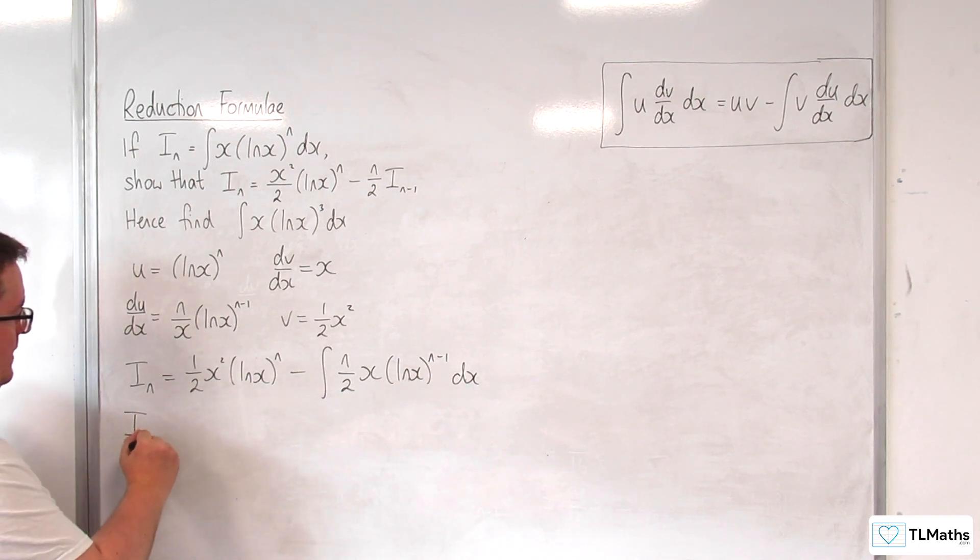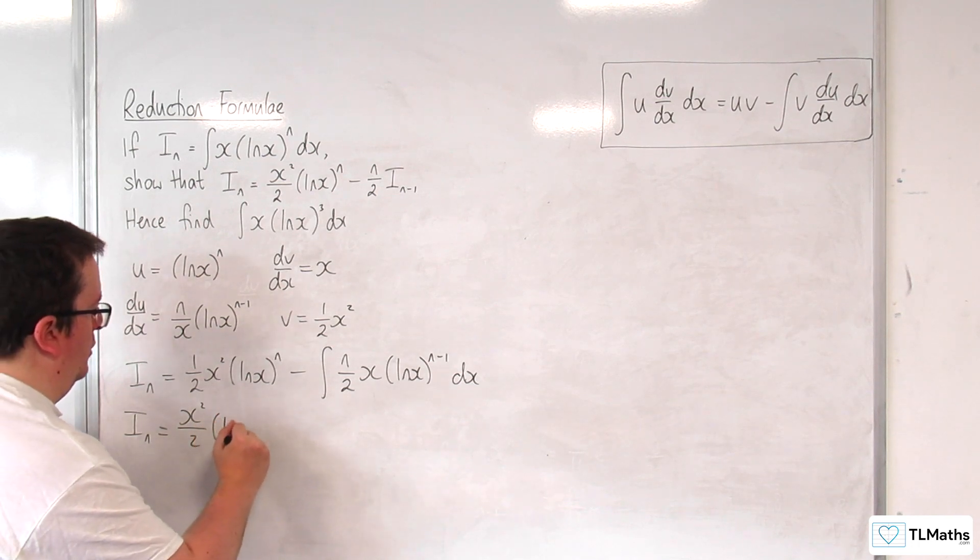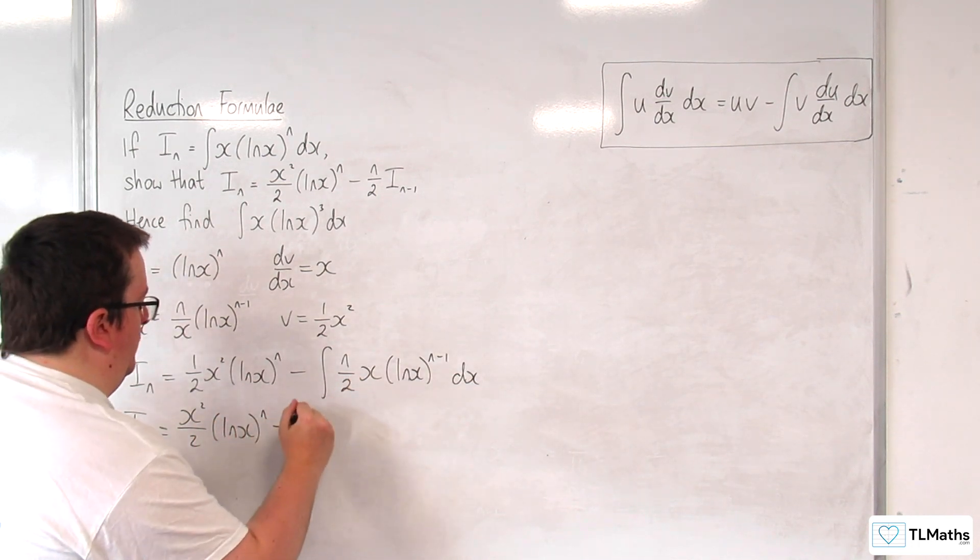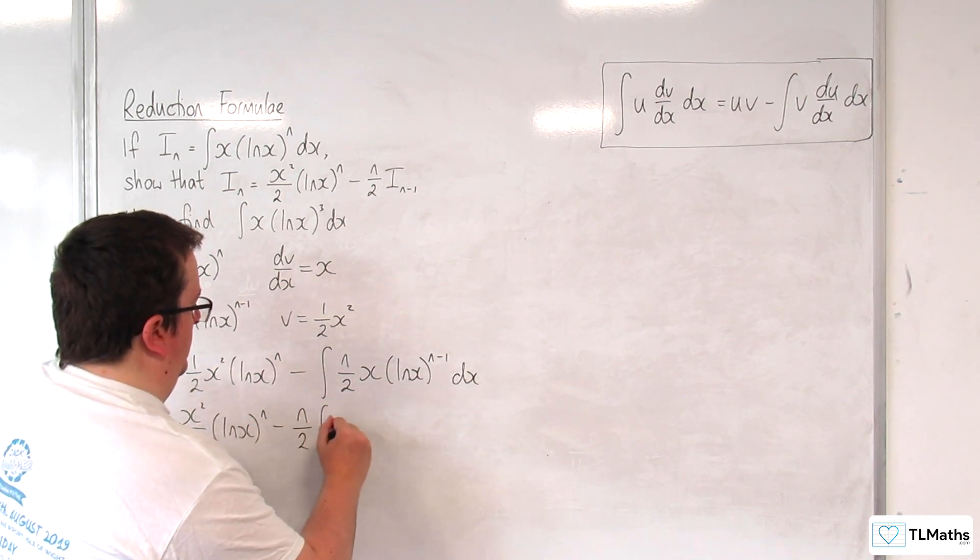So I can write that as x squared over 2 log of x to the n, bring the n over 2 outside of the integral, like so.